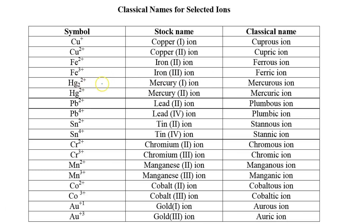Other common classical names: mercury with a charge of plus 1 is mercurous; plus 2 is mercuric. Lead with a charge of plus 2 is plumbous; plus 4 is plumbic. Tin has the classical name stannous for plus 2 and stannic for plus 4. These are actually Latin names, which is why they seem different from the English element names. Chromium with a charge of plus 2 is chromous; plus 3 is chromic.